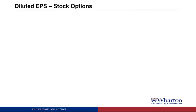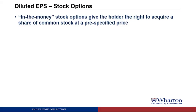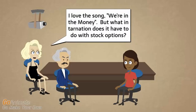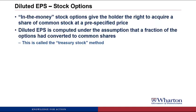Now let's look at how stock options affect diluted EPS. In-the-money stock options give the holder the right to acquire a share of common stock at a pre-specified price. An in-the-money option is one where the current stock price is above the exercise price, so you'd have incentive to exercise it and make a profit. Those are the options we account for in diluted EPS, because those are the ones that could turn into stock at any point. Diluted EPS is computed under the assumption that some fraction of these in-the-money options are converted to common shares — using the treasury stock method.